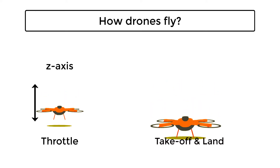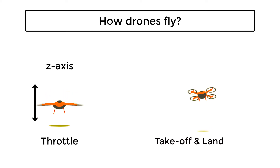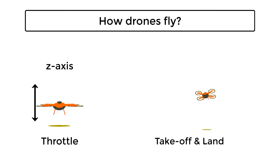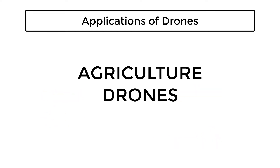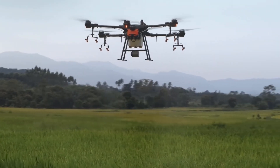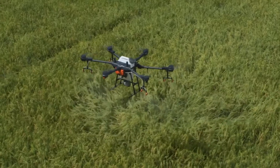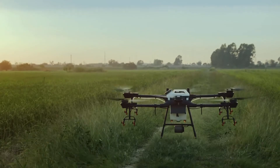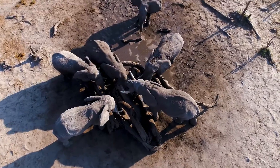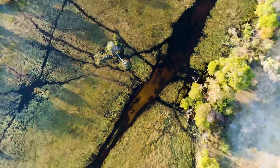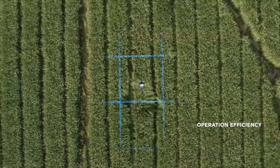All these movements are controlled by rotating propellers in different directions, which we will understand later when we start programming different movements in the drone using Python. In the agriculture domain, drones are used to monitor the health of crops and also help in sprinkling water and other chemicals beneficial for crops. With the limitation of human intervention in wildlife, drones are the best way for aerial inspection of changes in animal population and detecting changes in forest cover.